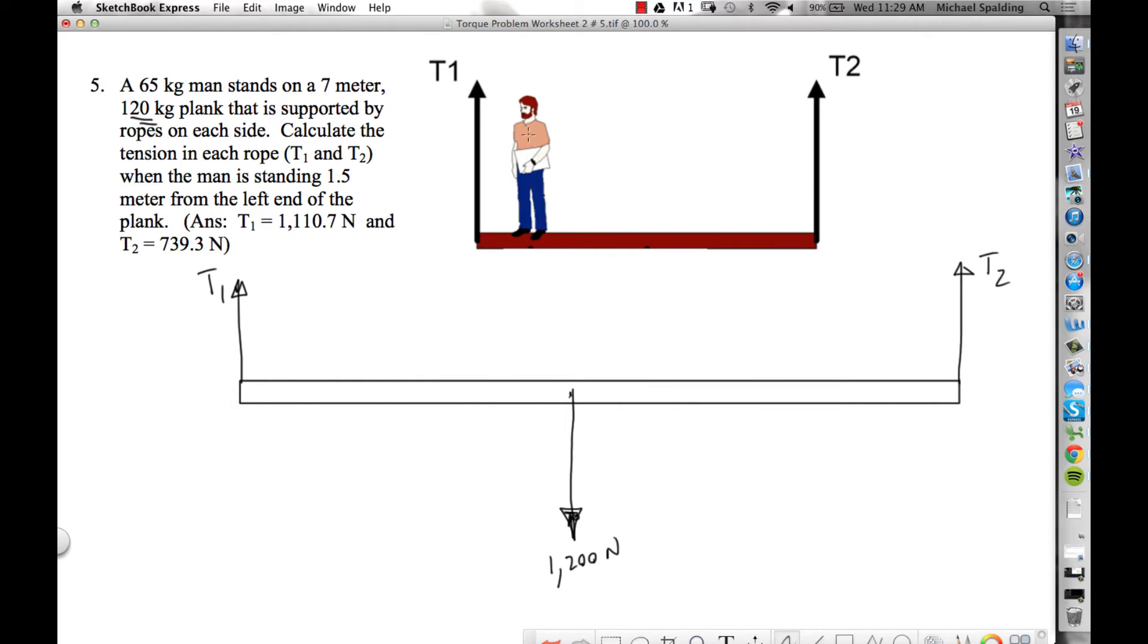Then we have ropes on each side: tension 1 over here, tension 2 over there. And then the only remaining force is the weight of this guy, and he is here. If he's 65 kilograms, multiply that by 10, 650 newtons. Now what we're trying to find is the tension in each rope: T1 is a question mark and T2 is a question mark.